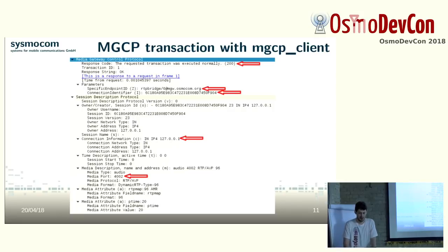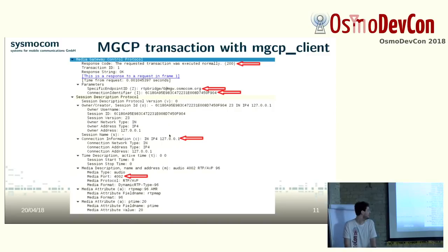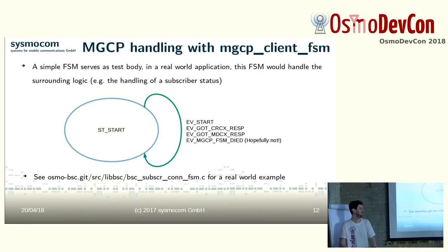Looking at the response, we see our 200 OK. We see that the MGW assigned endpoint zero, we see the connection ID, we see the IP address where it expects RTP data, and we see the port. That's the low-level way to do it.